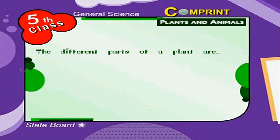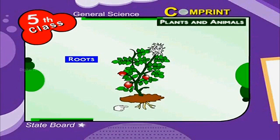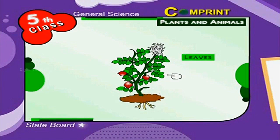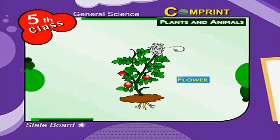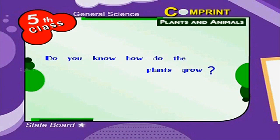The different parts of a plant are roots, stem, leaves, fruits and flowers. Do you know how do the plants grow?